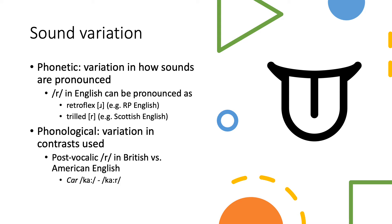Or the variation can affect the phonological structure, and that means that there is variation in which contrasts are used and how. For example, the same sound R when it is after a vowel in British English is typically not pronounced. So a word C-A-R will be pronounced as 'car' without the R at the end. However, in American English, even word-final and post-vocalic R will be pronounced as 'car'.